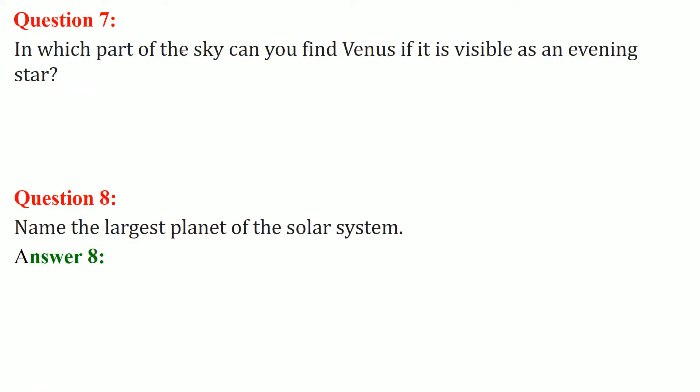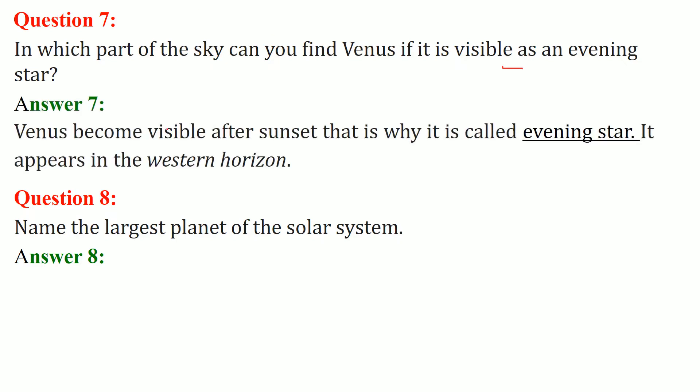In which part of the sky can you find Venus if it is visible as an evening star? So it's the western horizon. Venus becomes visible only after sunset. That is why it is called an evening star. It appears in the western horizon.